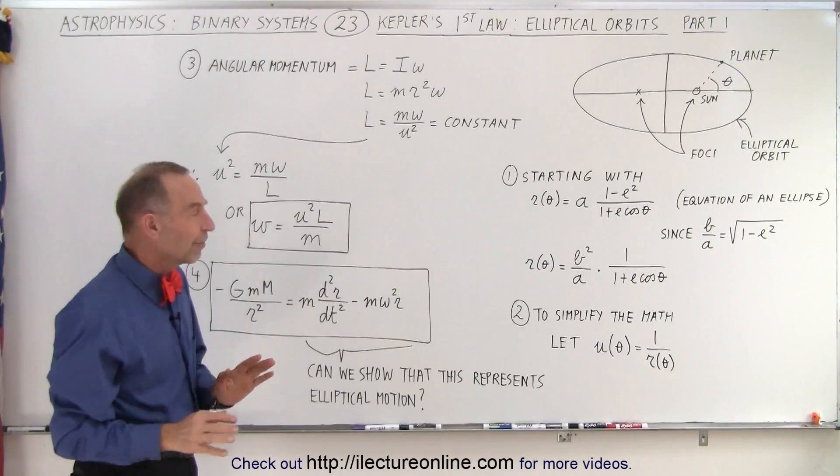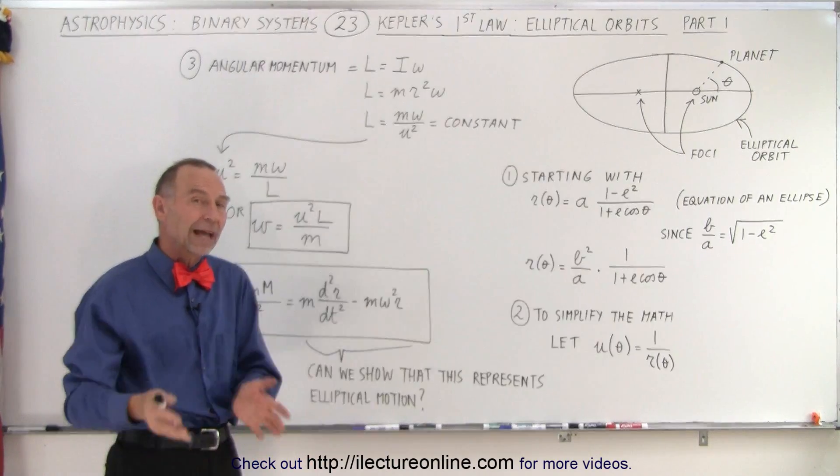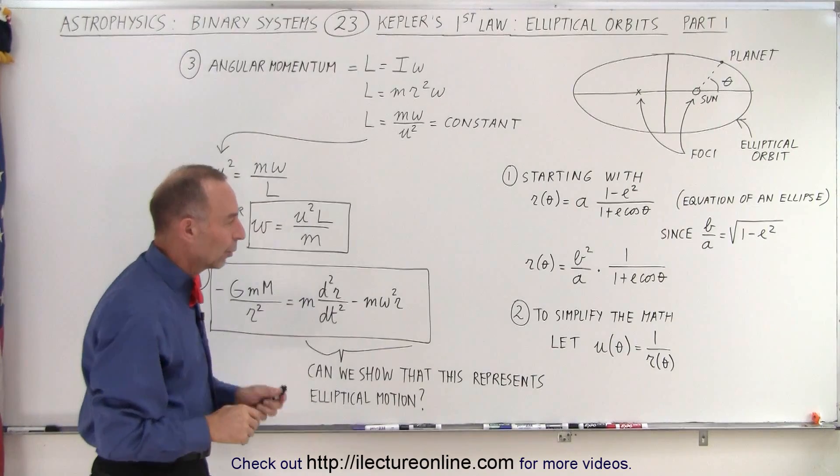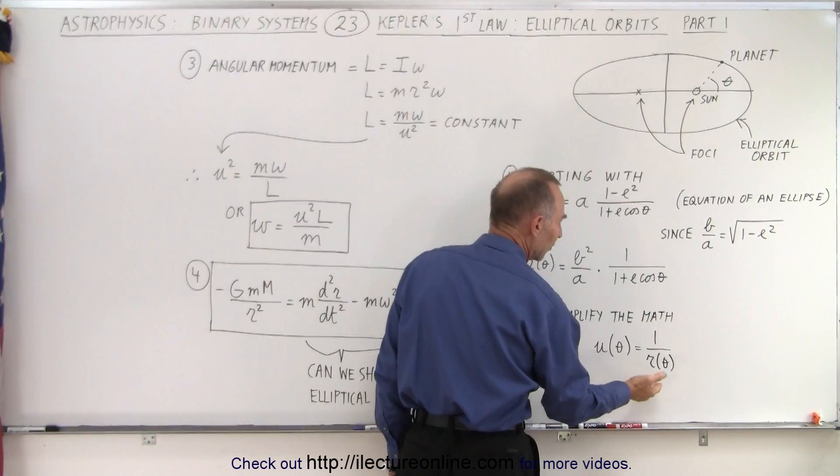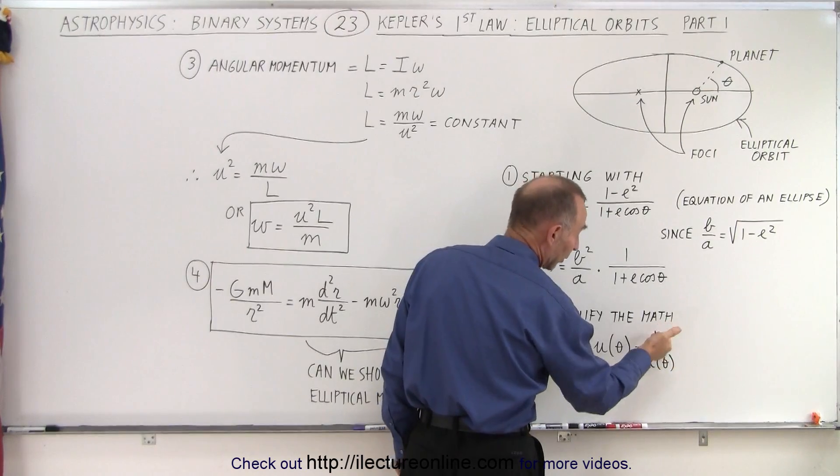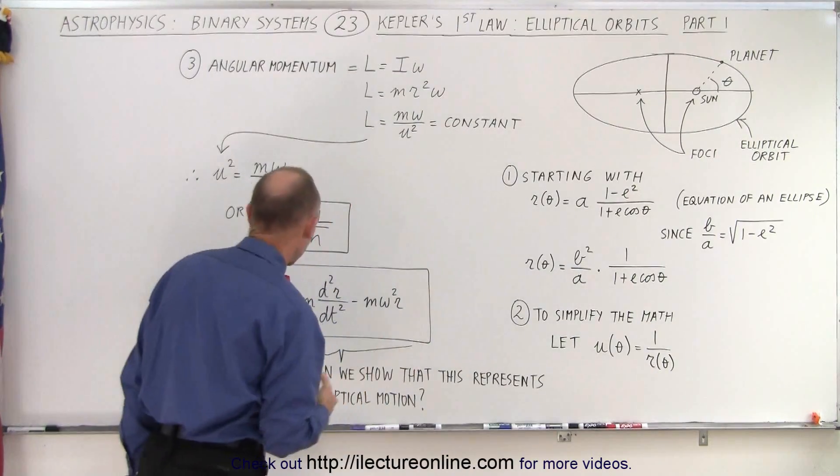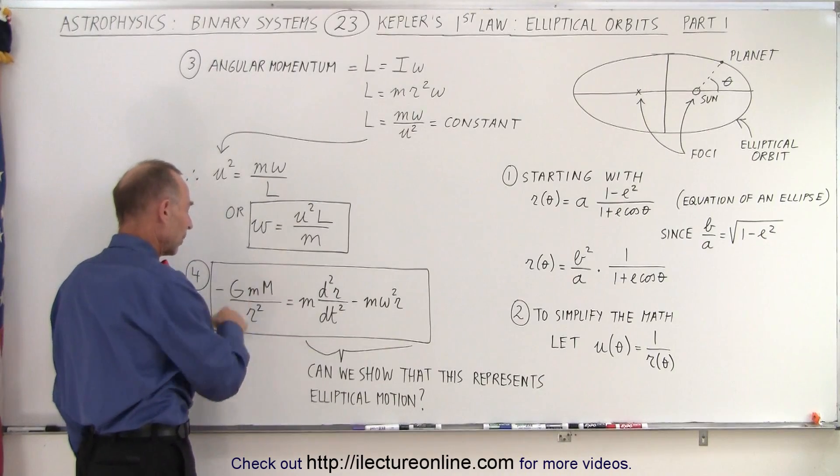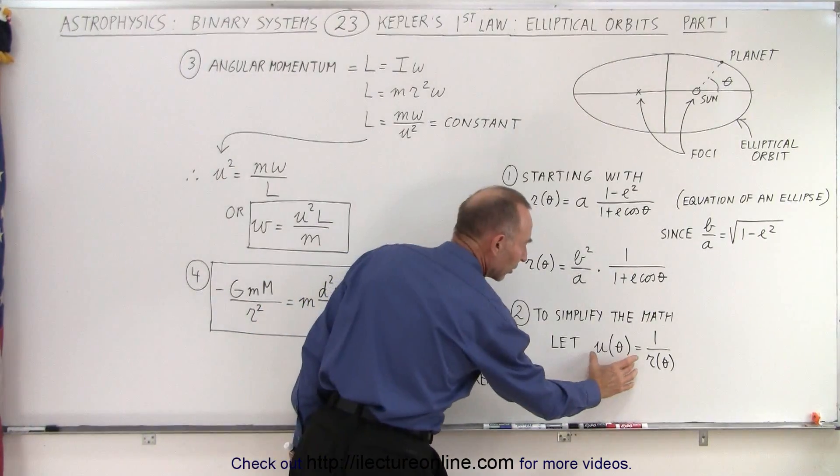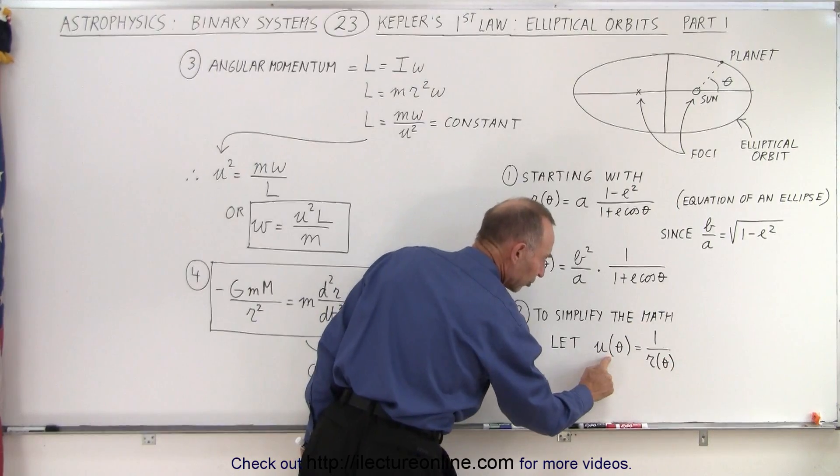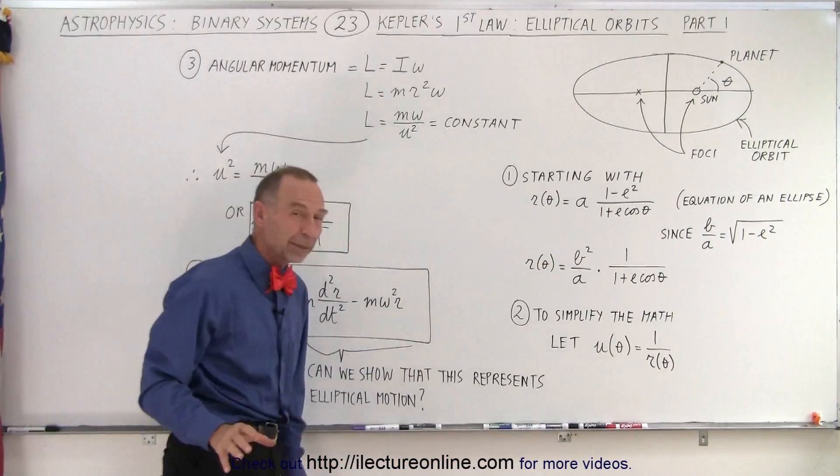Now to simplify the math, because later we'll need to take some derivatives, we'll substitute 1 over R as being equal to U of theta. Notice that when we use this equation, we have 1 over R squared. Replacing that with a function like this makes things easier.